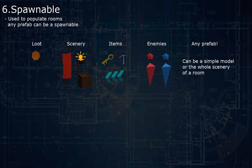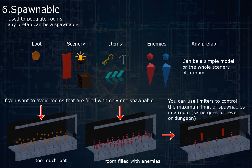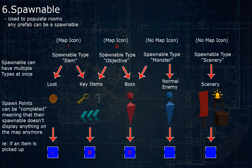The spawnables are assets that are used to populate the rooms. They can be anything — loot, scenery, items, enemies, anything you can think of. You can configure spawnables with limiters, so you don't spawn too much of something in the same room, level, or dungeon. When a room is rendered, the spawnables are rendered as well. Spawnables have types, like connectors, which allows you to display some spawnables on the map if you want.